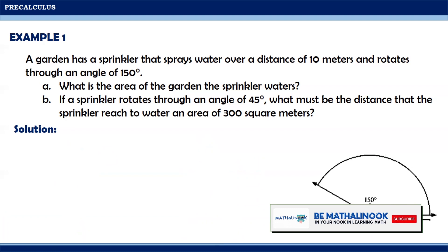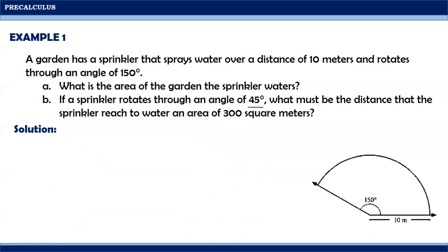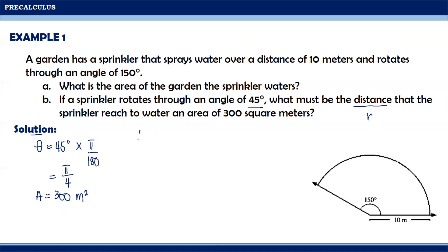Solving for part b: if the sprinkler rotates through an angle of 45 degrees, what must be the distance the sprinkler reaches to water an area of 300 square meters? We are asked to find r, given that theta equals 45 degrees and the area equals 300 square meters. Converting theta to radians: 45 times pi over 180 gives pi over 4. Since we are looking for r, we use the formula A equals one-half r squared theta.